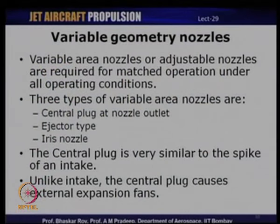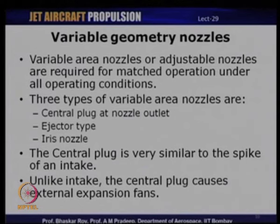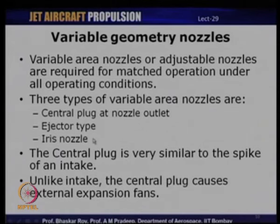Now let us look at what are the different types of variable geometry nozzles. Variable area nozzles, or adjustable nozzles, are required for matched operation under all operating conditions. If this has to be satisfied under various operating conditions, one would need to go for a variable area nozzle. There are different types of variable area nozzles: one is known as the central plug nozzle, the other type is the ejector type, and the third type is the iris type. These are three different types of nozzle geometries which have been used in various aircraft.